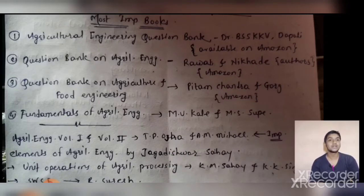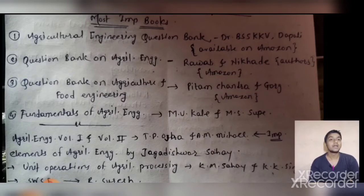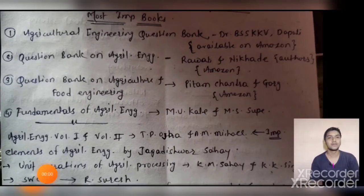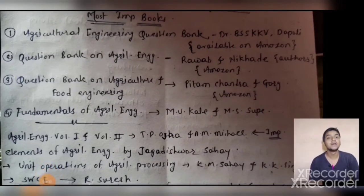The third book is 'Question Bank on Agriculture and Food Engineering' by Peetam Chandra and Gurg. Then the fourth is 'Fundamentals of Agriculture Engineering' by M.U. Kale and M.S. Supe. The next book is 'Agriculture Engineering Volume One and Volume Two' by T.P. Osha and M. Michael.